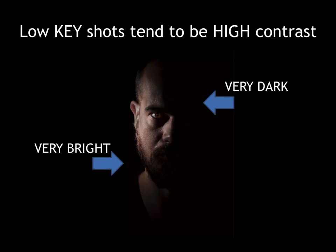Low key shots tend to be very high contrast. In this image, you can see a huge difference between the subject's right side and left side — one side is very dark and the other is very bright. So if the ratio is very extreme, we say this is high contrast photography, which tends to feature a bright key light.